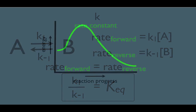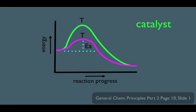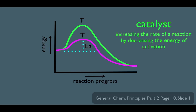One more principle: consider an energy versus reaction progress diagram. The top of the hump is the transition state, which makes the height of that hump the activation energy. What a catalyst does is stabilize the transition state, which lowers its energy. The new reaction coordinate diagram shows a lower hump, meaning the catalyst effectively lowers the activation energy. The lower the activation energy, the more rapidly the reaction proceeds. So a catalyst increases the rate of a reaction by decreasing the energy of activation.